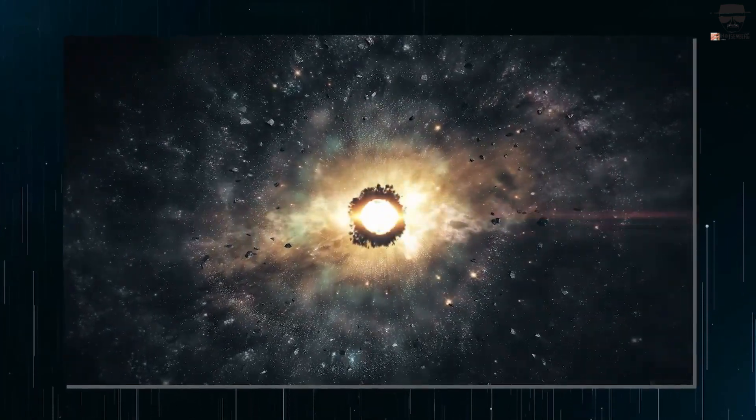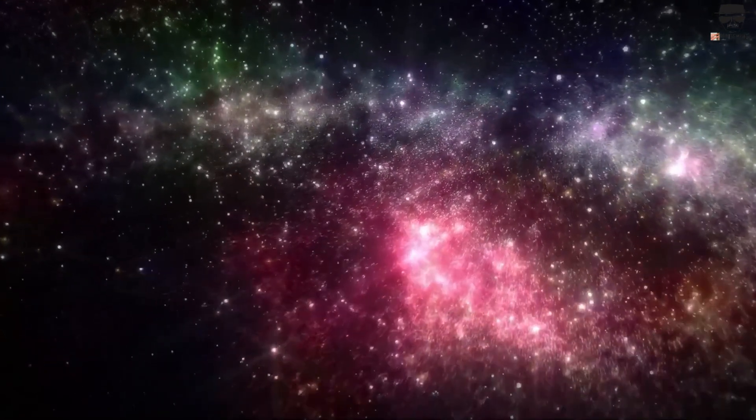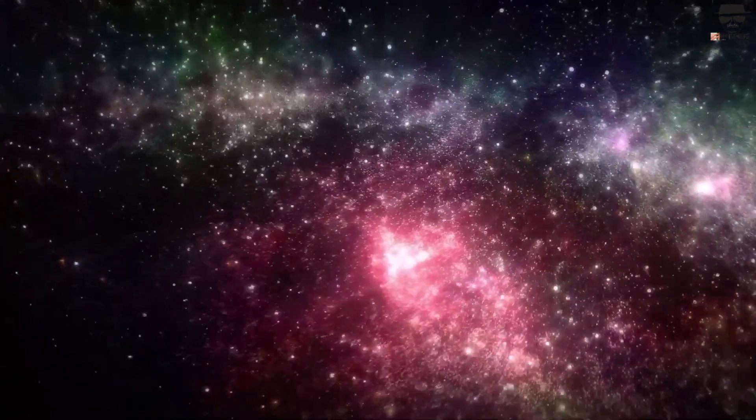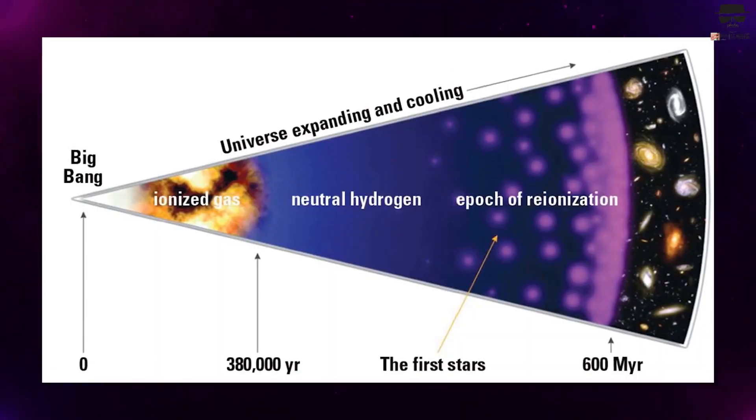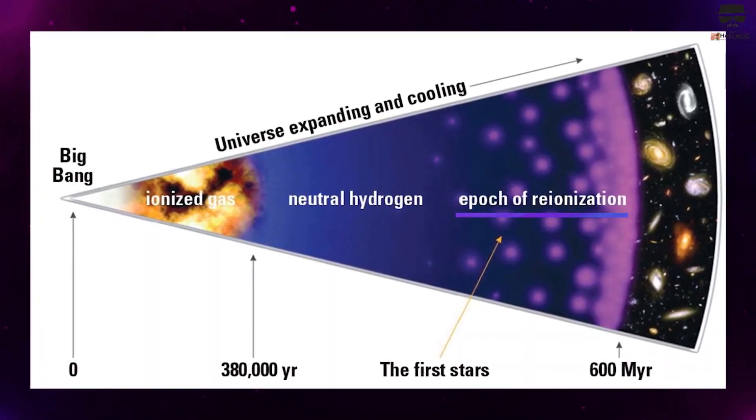But then came the Dark Ages, a time of cosmic darkness before the arrival of stars and galaxies. Around 150 to 400 million years later, the universe escaped this cycle through a process called re-ionization.